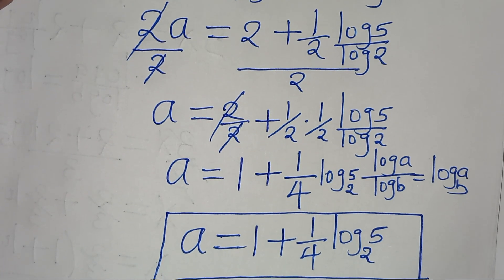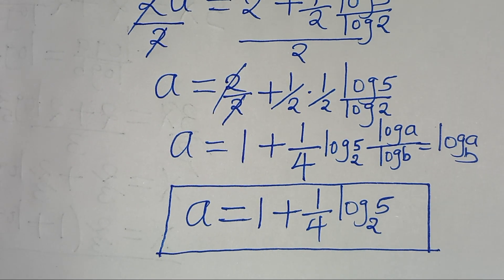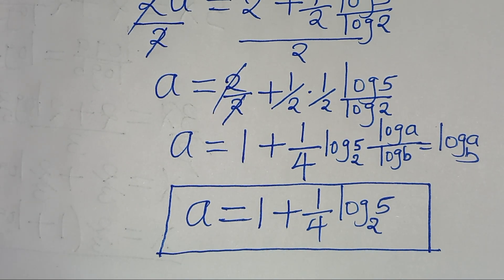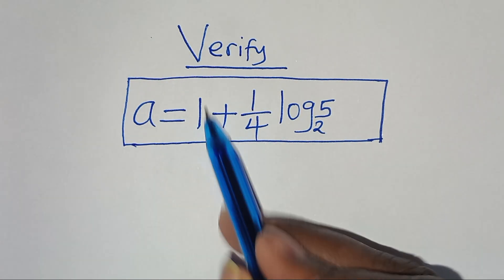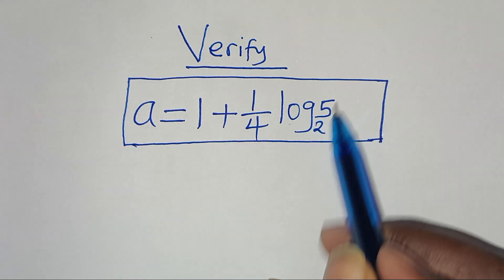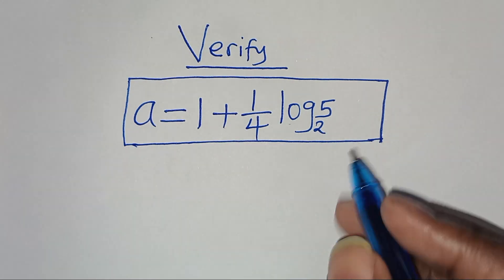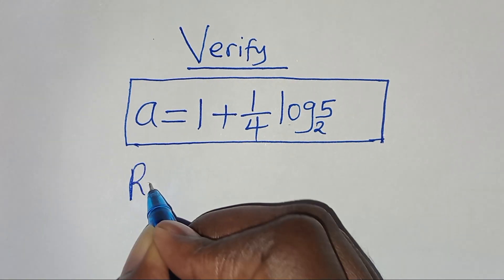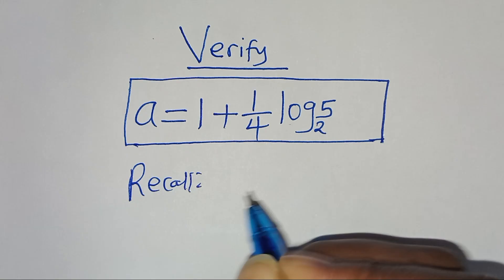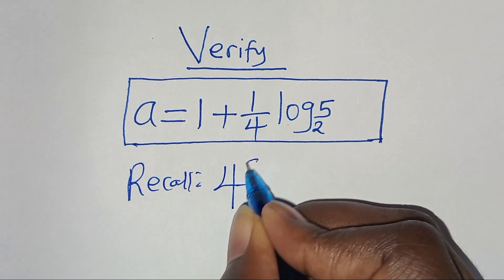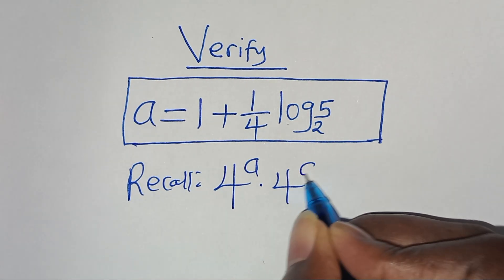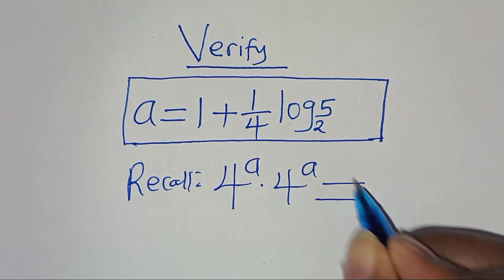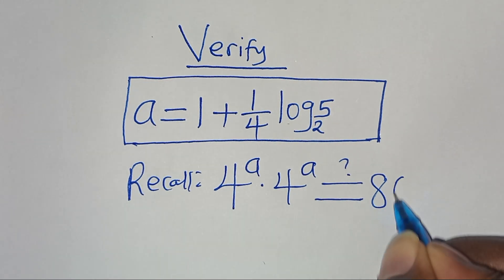The next step is to verify that this value of a satisfies the equation. We need to confirm that 4 to the power of a multiplied by 4 to the power of a gives us 80, where a equals 1 plus one-quarter·log₂5.